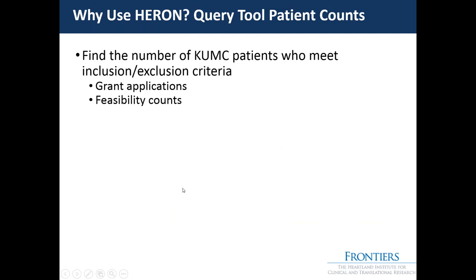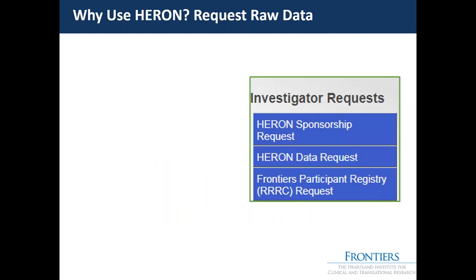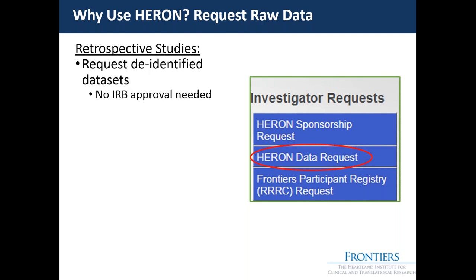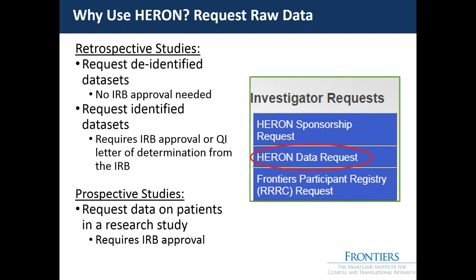One of the reasons to use i2b2 is to find patients who meet inclusion or exclusion criteria for feasibility counts. You can build your inclusion or exclusion criteria and see how many patients are eligible. We allow faculty members to request raw data using the Heron Data Request button. They can request de-identified data sets with no IRB approval needed, or identified data sets which require IRB approval or a QI letter of determination. It can also be used for prospective studies, which requires IRB approval.